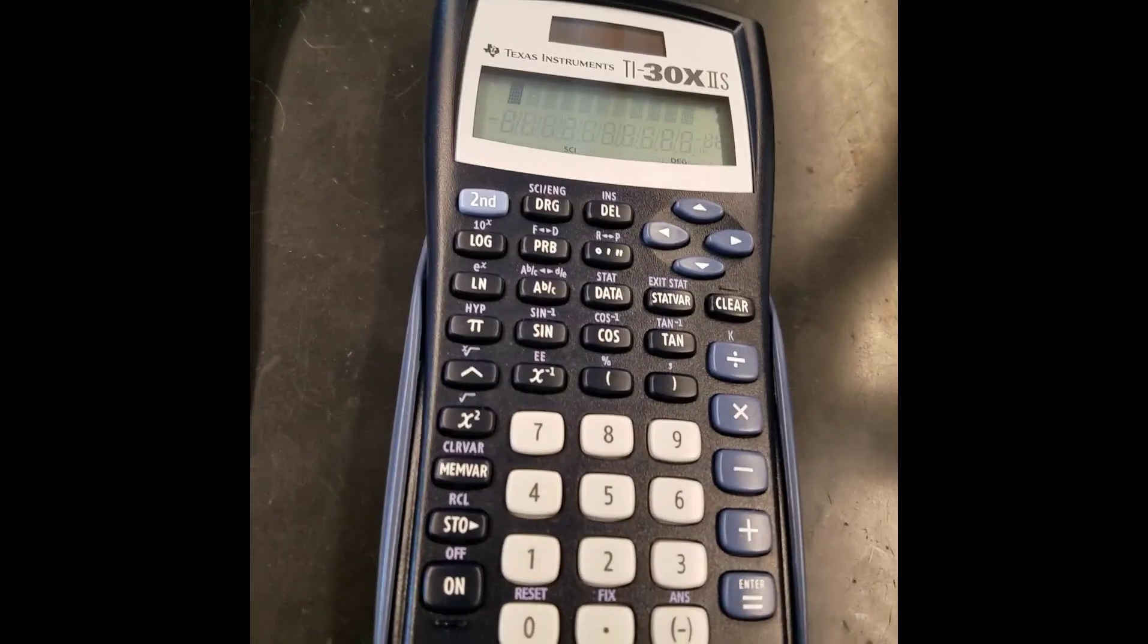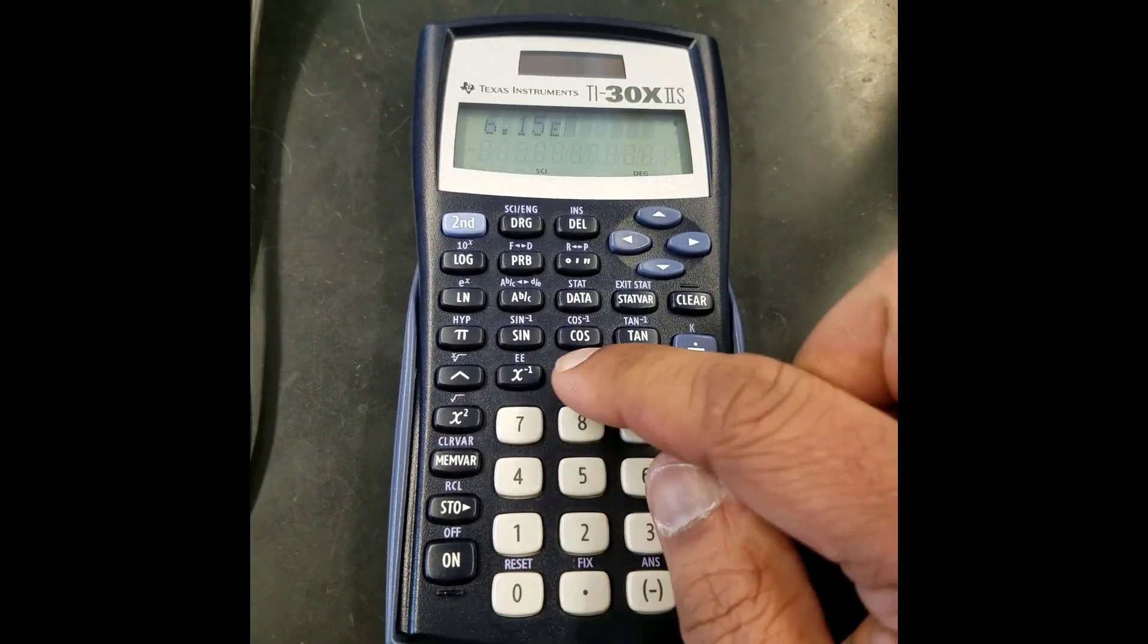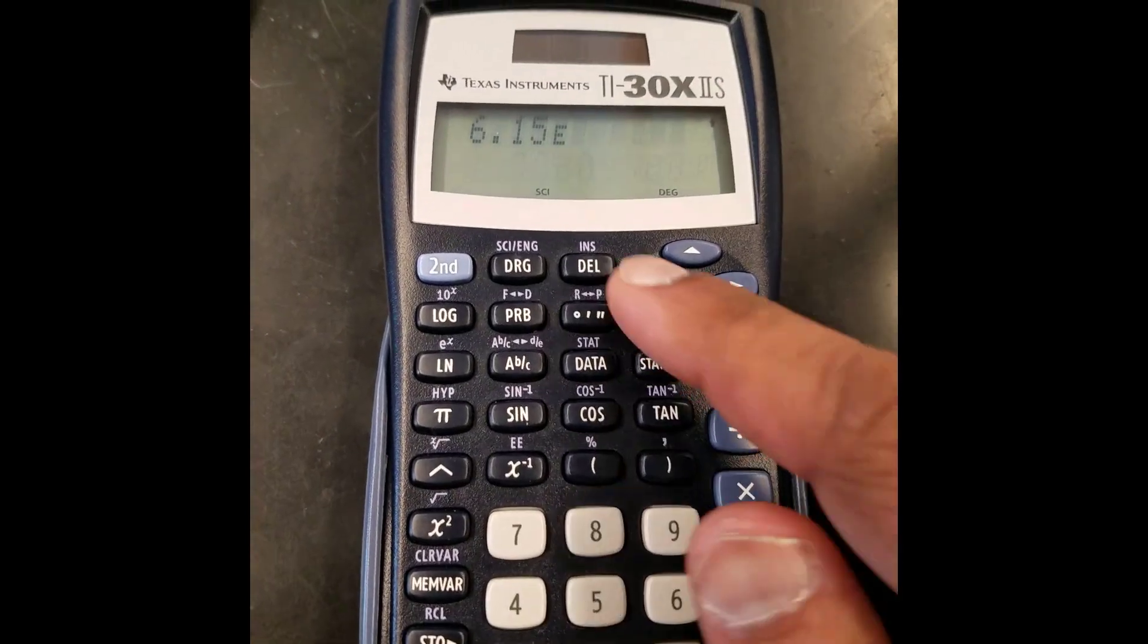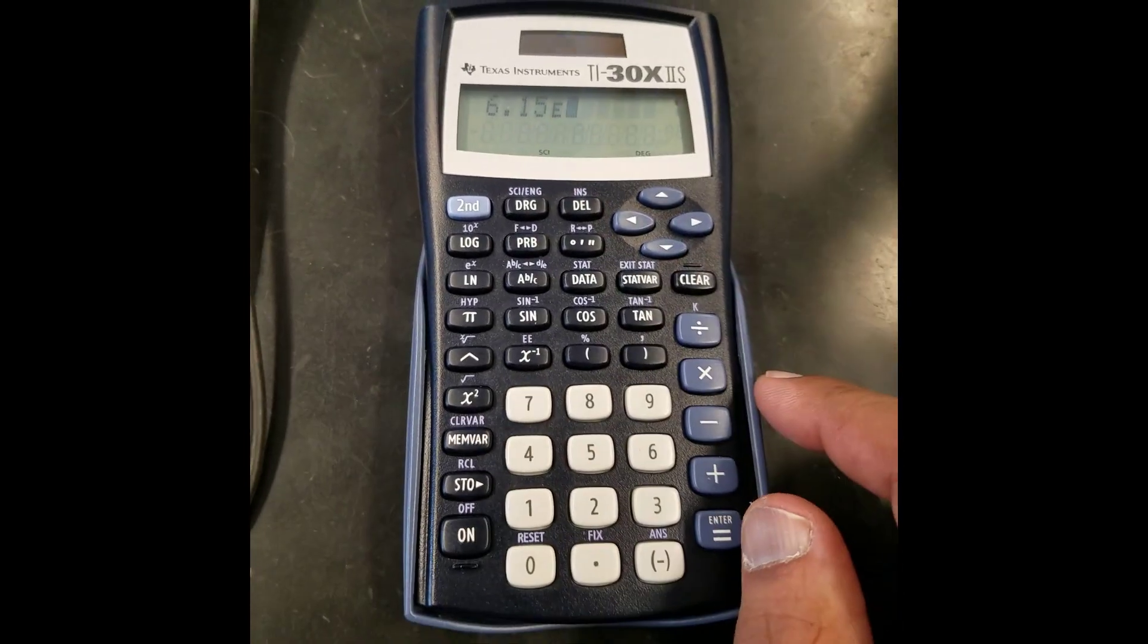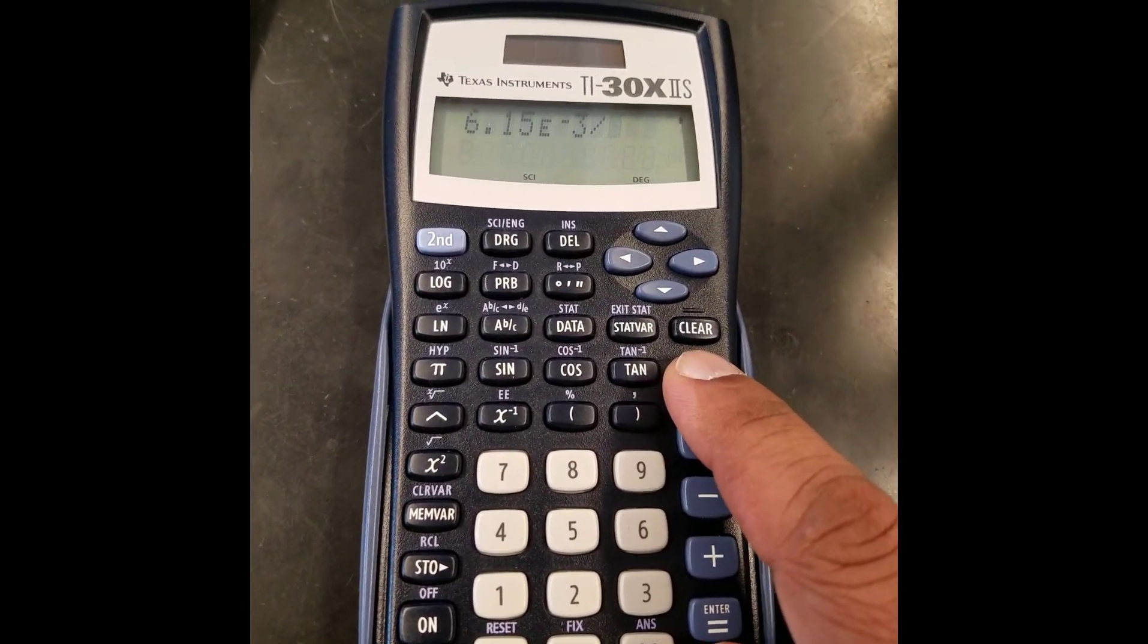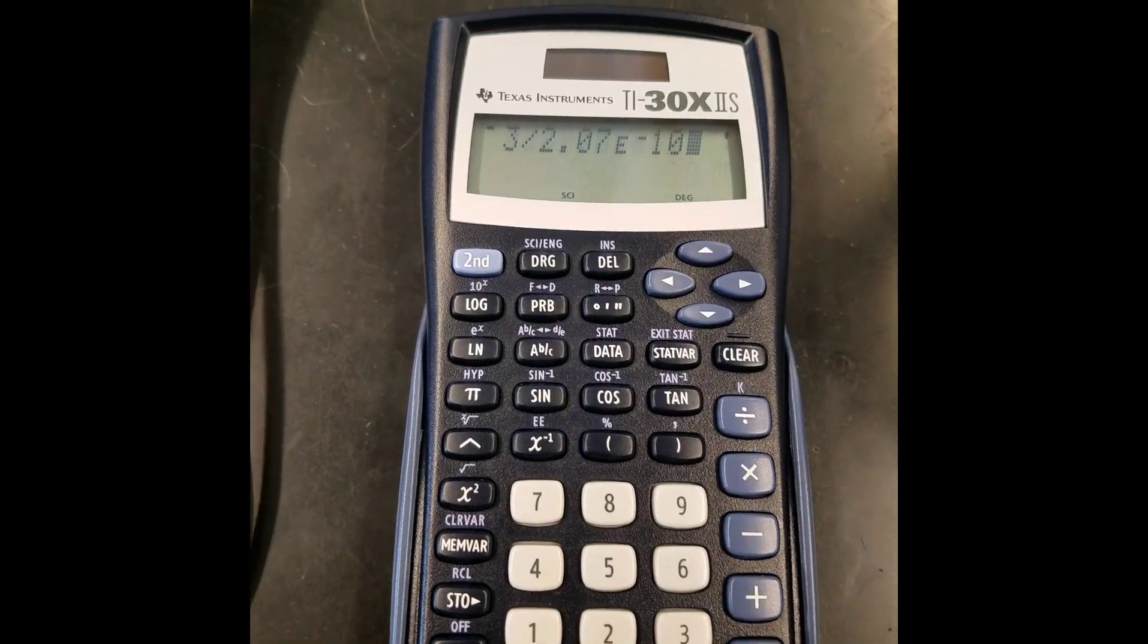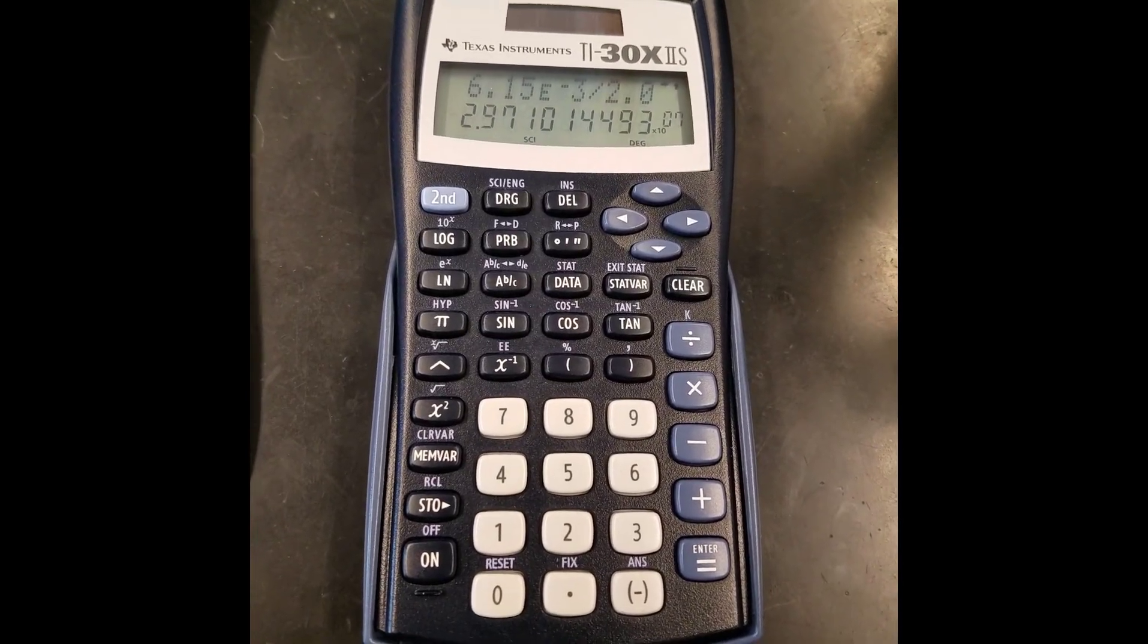Okay, so after you turn your calculator on, you type in the numbers 6.15, second function, EE. See how there's this EE letters next to the x-1? It's blue, so you've got to use the second function. Some of your calculators have an EXP button, which makes it even faster. But you see it's E, not times E. Just E. That's times 10. So then you do times 10 to the negative 3rd power, and then you divide by 2.07, and then second function EE again. There's only a single E on the screen, and negative 10. Then you hit equals. So the answer is 2.97 times 10 to the positive 7.